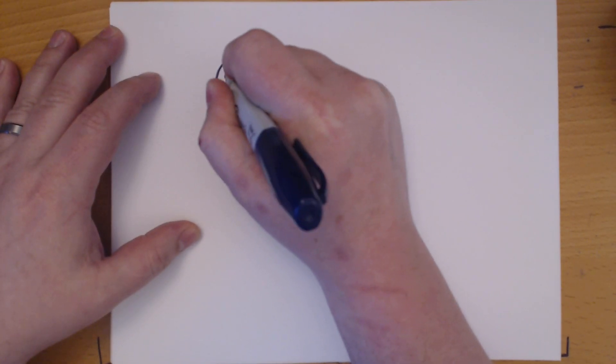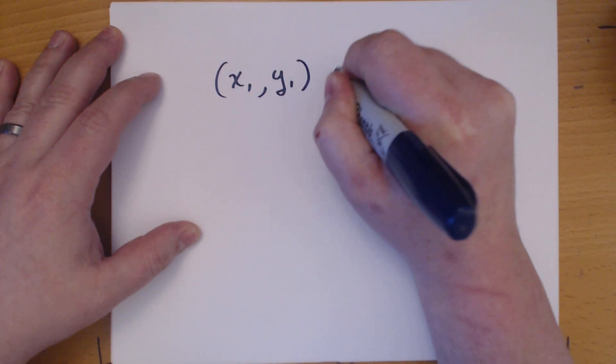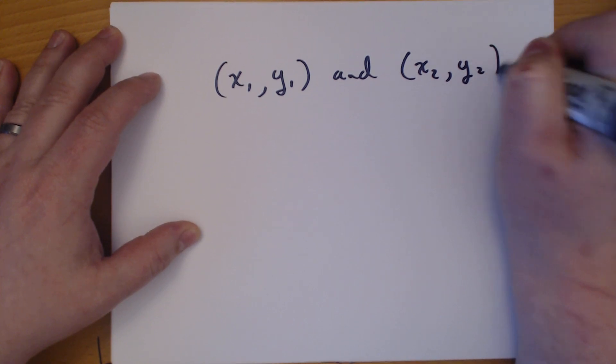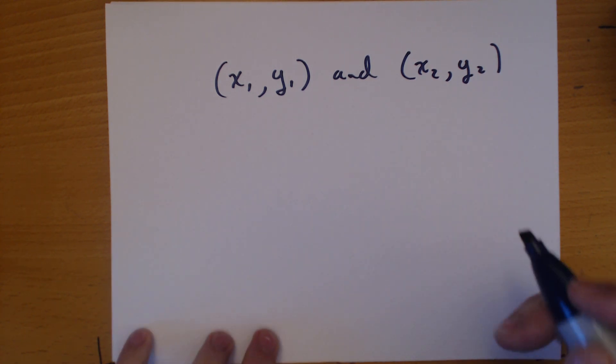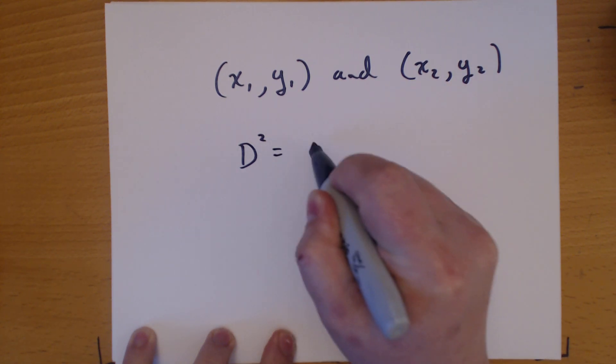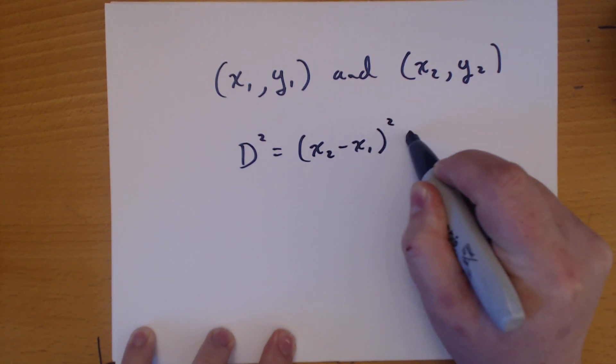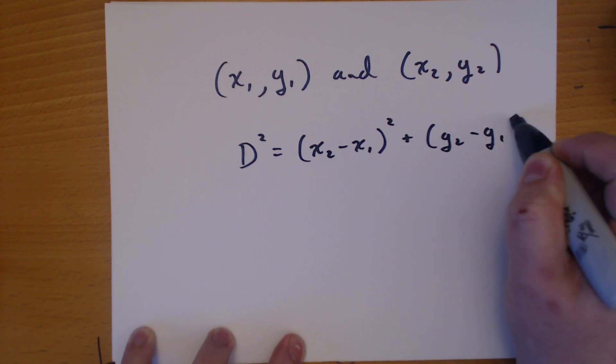Let's call them x1, y1 and x2, y2. Those are the points that we're going to be finding the distance between. And the formula is the distance squared equals x2 minus x1 squared plus y2 minus y1 squared.